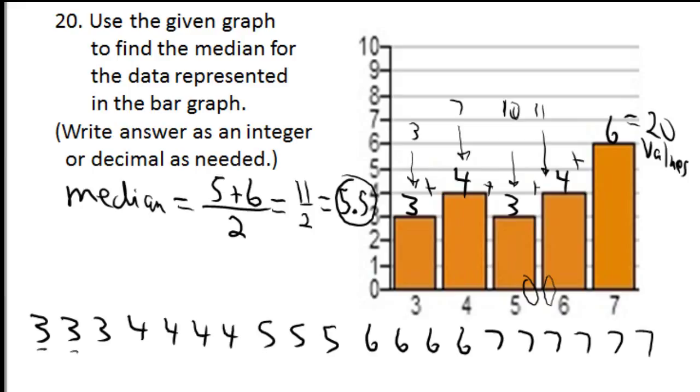You go one, two, three, four, five, six, seven, eight, nine, ten. There's your tenth and eleventh right there. That's where you get the five and the six. And if you average them again, you get 5.5. So, whatever it takes for you to get the right answer.